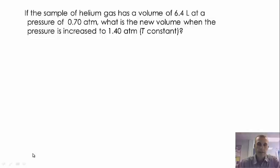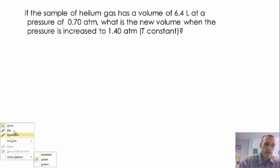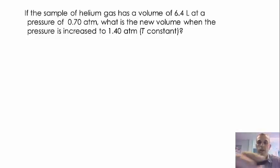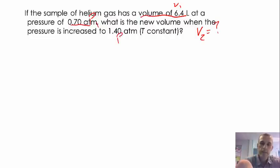Here's another problem. Helium gas has a volume of 6.4 liters at a pressure of 0.7 ATMs. What is the new volume when the pressure is increased to 1.4 ATMs? Instead of using the balloon picture, we're going to do the math and solve for it. So the initial volume V1 is 6.4 liters and initial pressure P1 is 0.7 ATMs. What we're looking for is V2, and P2 is 1.4 ATMs. The temperature is held constant.